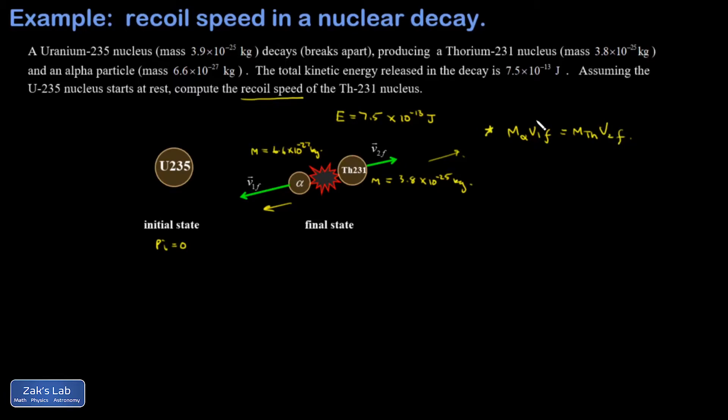The second thing I want to do is write down an energy equation. I'm just going to use this symbol E for the energy until the very end. My second equation tells us that the total energy of the decay is equal to the sum of the kinetic energies of these two particles: one-half M alpha V1 final squared plus one-half M thorium V2 final squared.